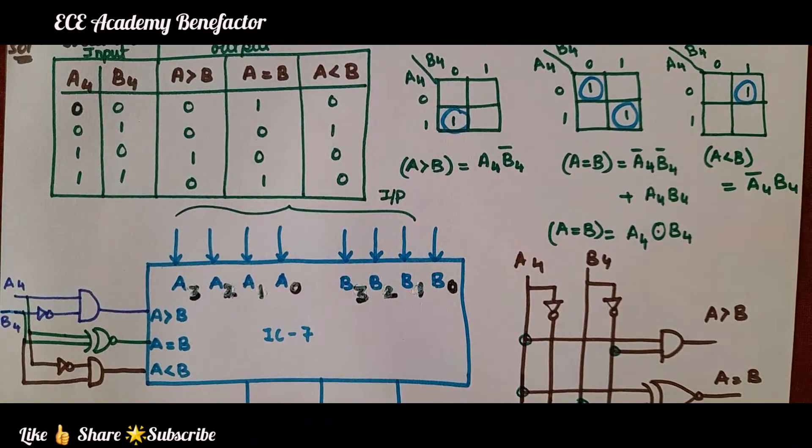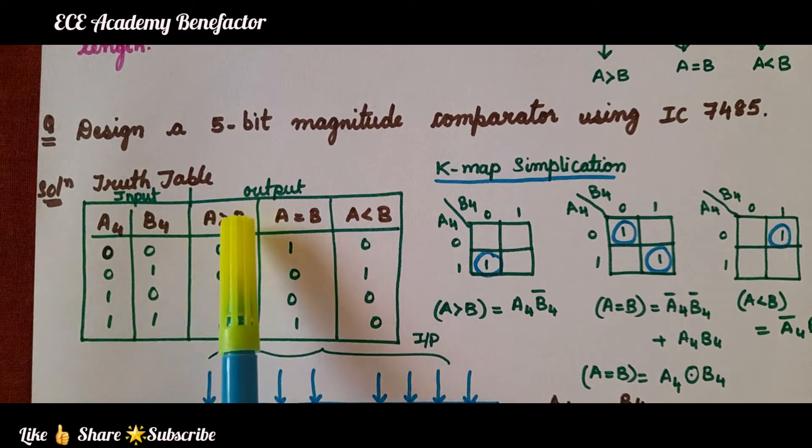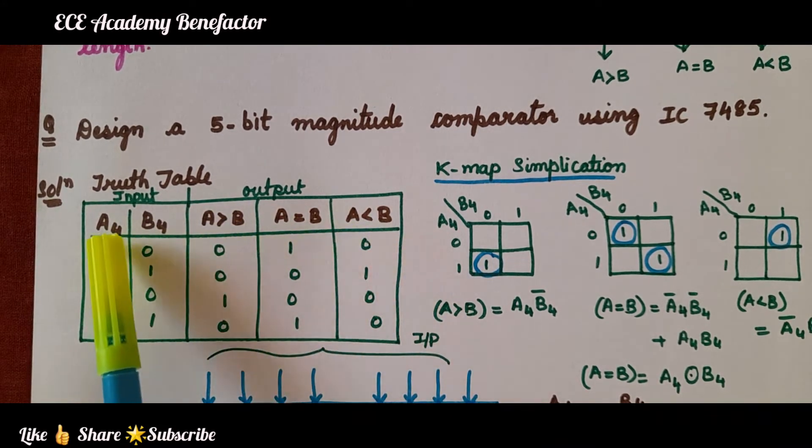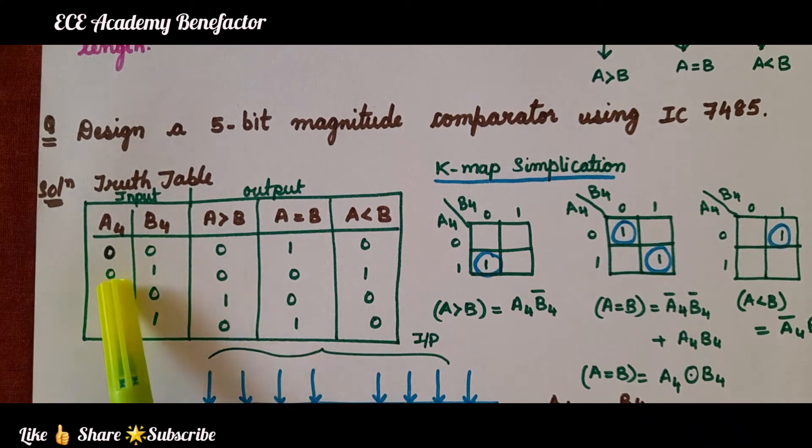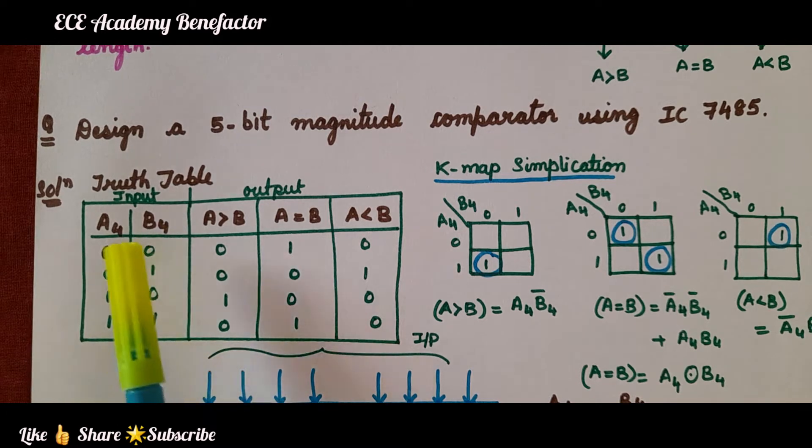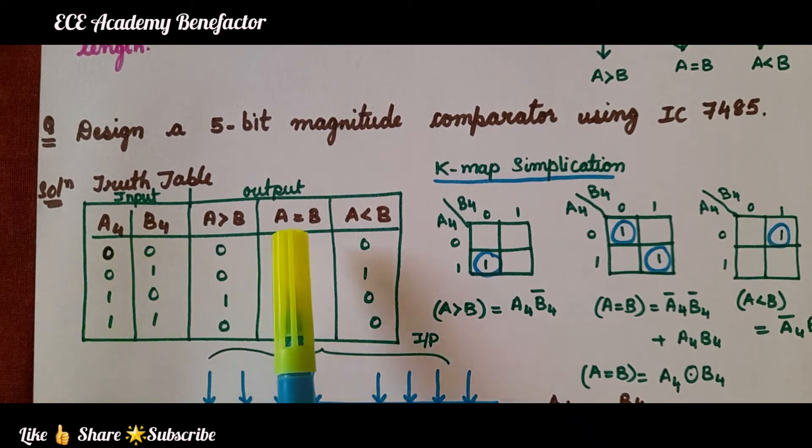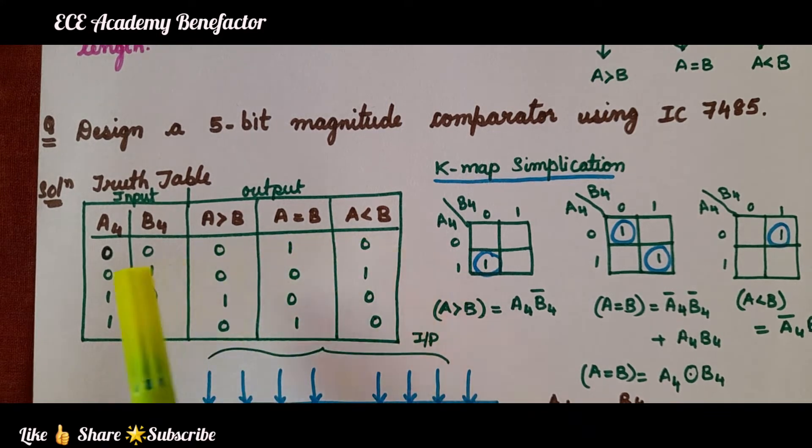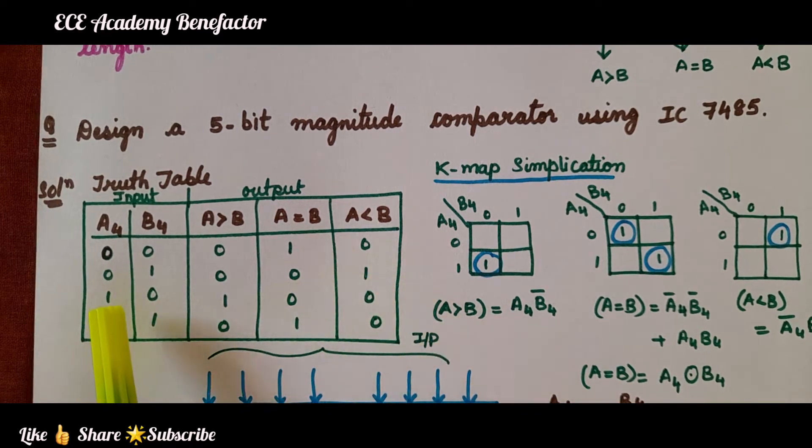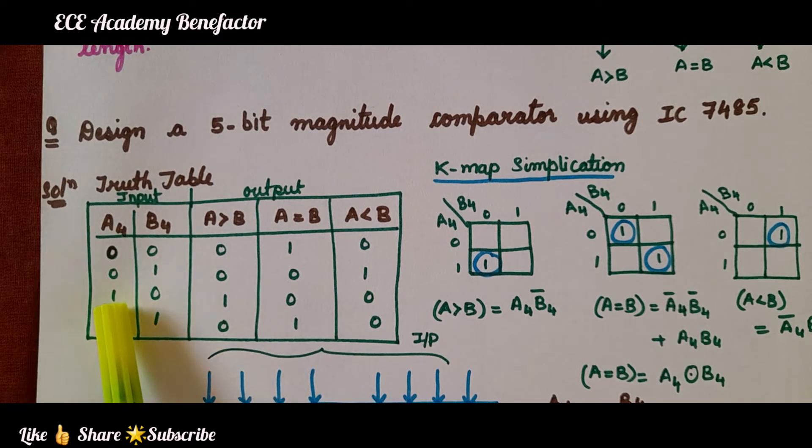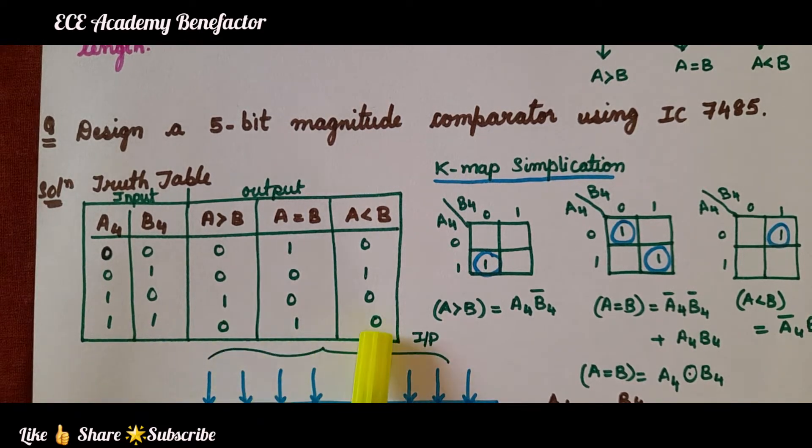First, let us draw the truth table for A4 and B4. A4, B4 are two inputs. Outputs are A greater than B, A equal to B, A less than B. For two inputs, we can write four combinations as 0 0, 0 1, 1 0, 1 1. Compare 0 0, both are equal, so A is equal to B became 1 and these two are 0. Compare 0 1, B is greater, so A less than B is made as 1. Here 1 0, compare 1 0, A is greater, so A greater than B is made 1. 1 1 means A is equal to 1 and these two are made 0.